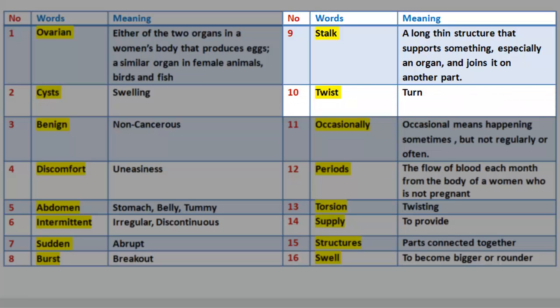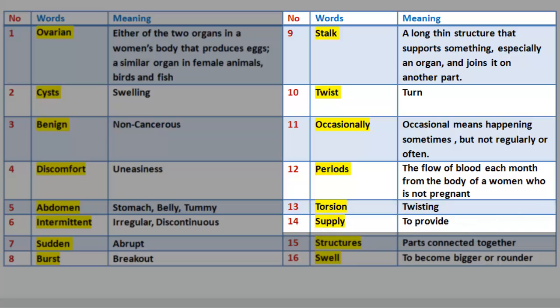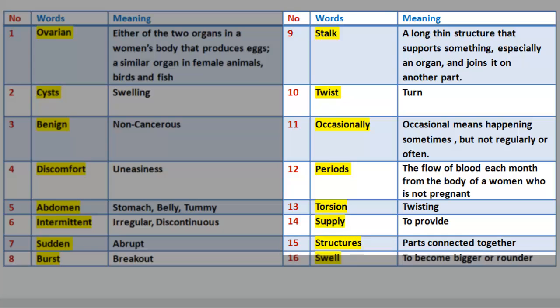10. Twist: turn. 11. Occasionally: happening sometimes, but not regularly or often. 12. Periods: the flow of blood each month from the body of a woman who is not pregnant. 13. Torsion: twisting. 14. Supply: to provide. 15. Structures: parts connected together. 16. Swell: to become bigger or rounder.